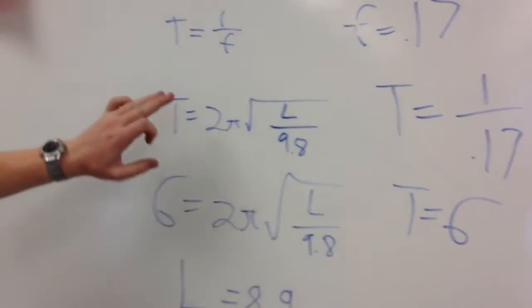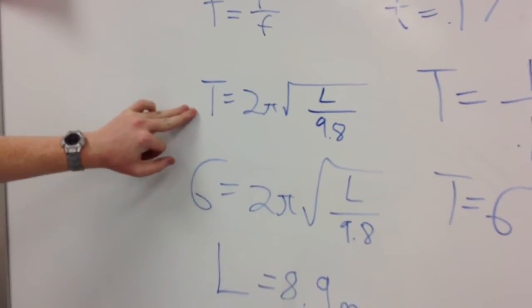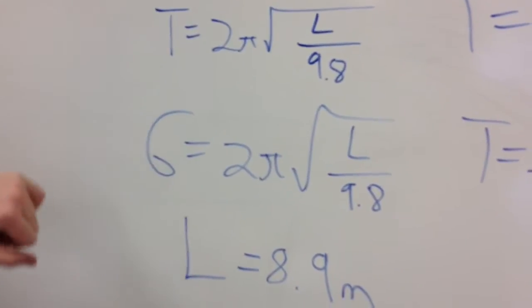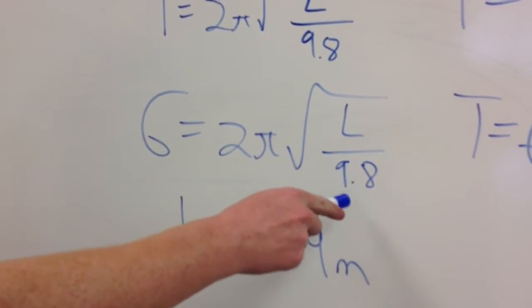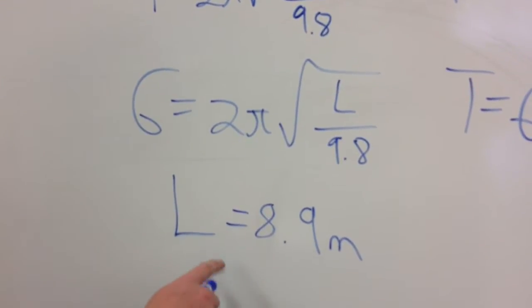Now we will substitute 6 into this equation, t equals 2π times the square root of length over 9.8. We're trying to find length, so we have 6 equals 2π times the square root of length over 9.8. Once we multiply it out, we get a length of 8.9 meters.